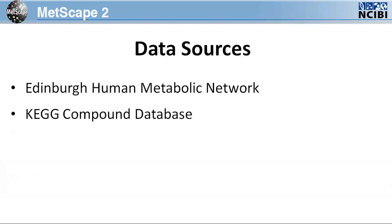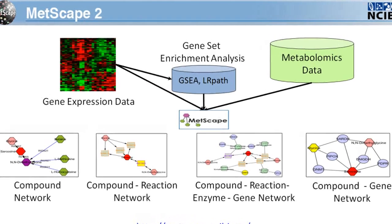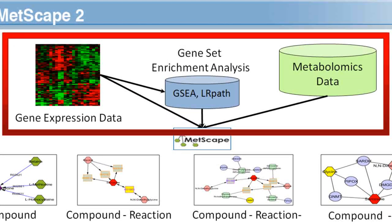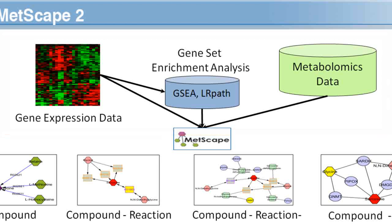Metscape uses data from the Edinburgh Human Metabolic Network and KEGG Compound Database. This image shows you the various workflows included in this plugin. You can use gene expression data, metabolomics data, and/or gene set enrichment data. Please note that all types of data are not necessary, for you can use any single type of data or any combination of the data types.